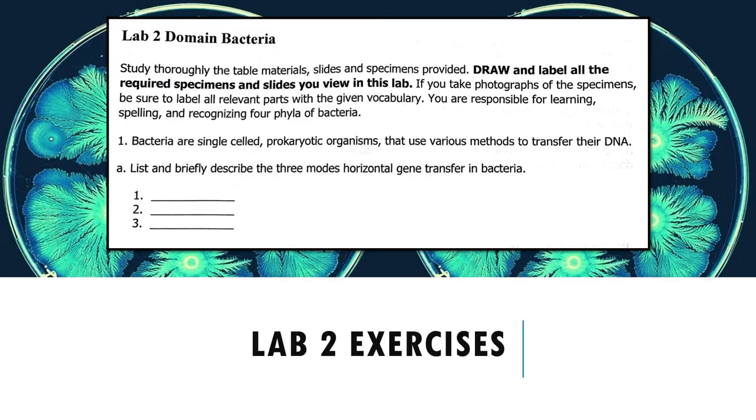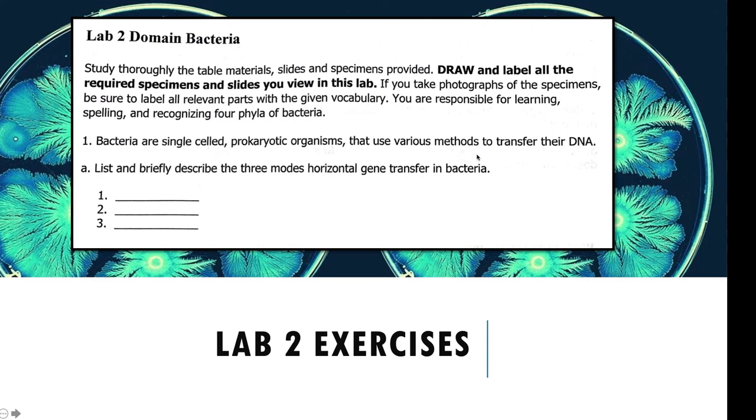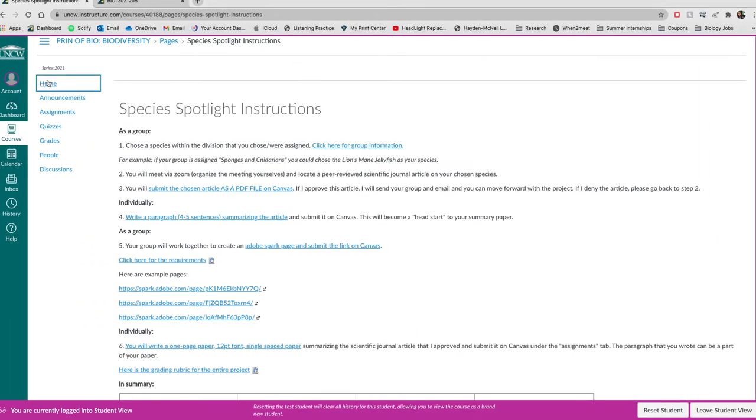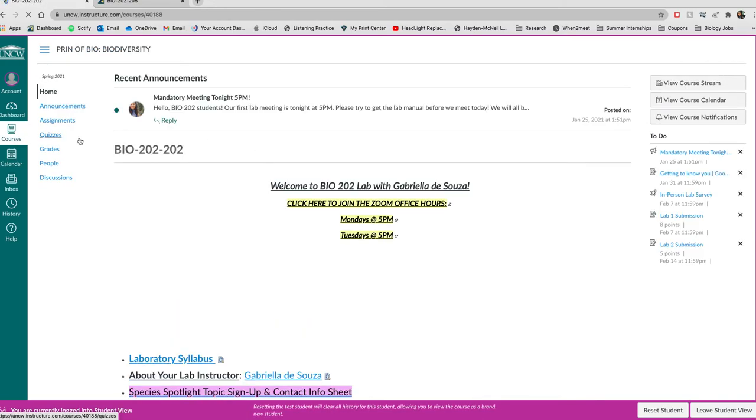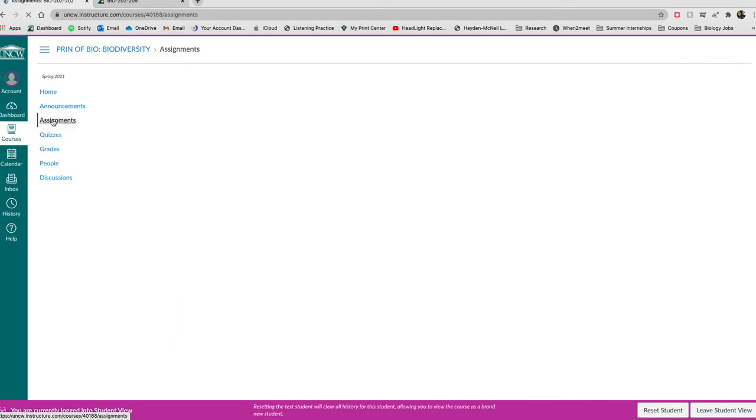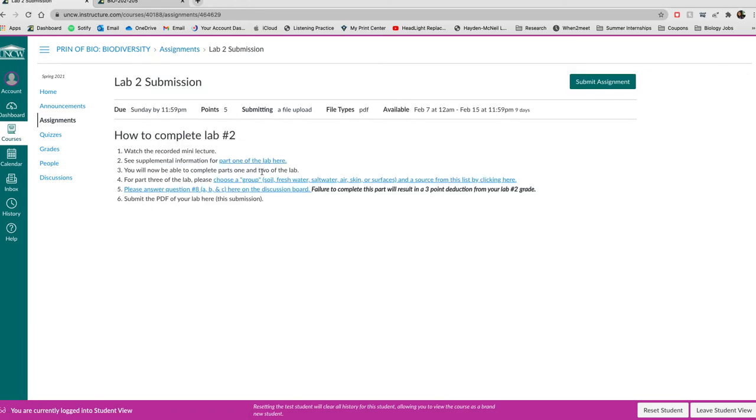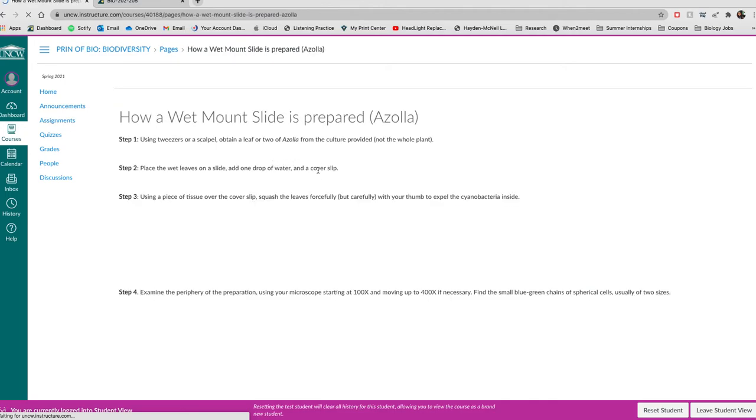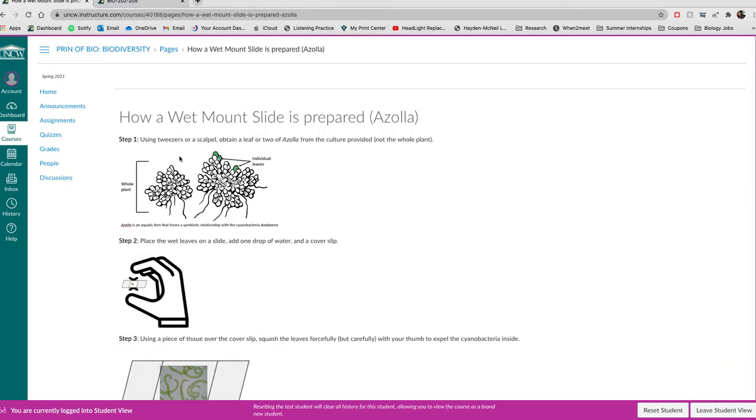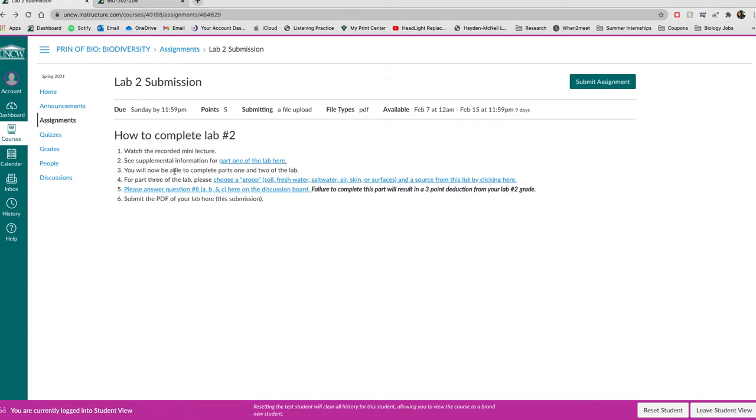So now you're going to complete the lab exercises. So part one just involves you going on canvas. So you'll go to the homepage. The easiest way to do this is go to assignments and then click lab to submission. So supplemental information here, you can click here. It'll help you answer those questions. You can go back now, try to answer the other questions using the PowerPoint and the lecture that I just provided.